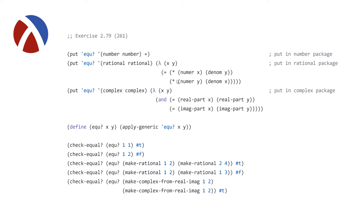For ordinary numbers, we use the equal sign just as we used plus and minus for arithmetic. For rational numbers, we use the cross-multiply trick: if the numerator of one times the denominator of the other equals the corresponding product, they're equal. For complex numbers, we check if the real part and imaginary parts are equal. Then we define the generic equ? procedure following the same pattern as sub, add, mul, and div. Unit tests show equ? on (1,1) returns true, (1,2) returns false; one-over-two equals two-over-four, and we verify complex number equality.